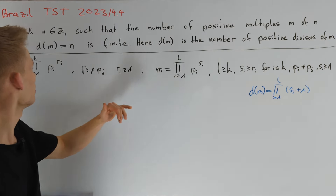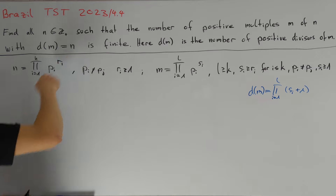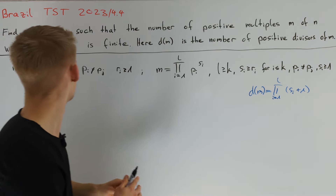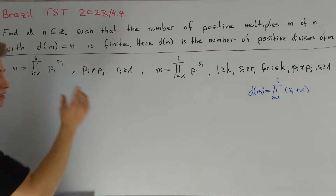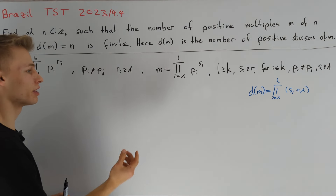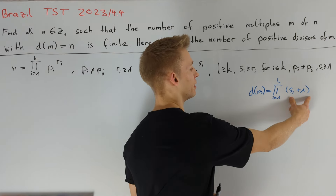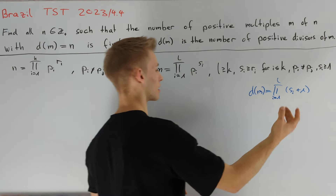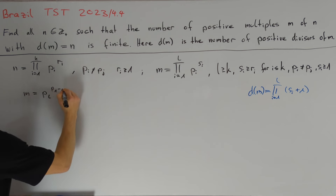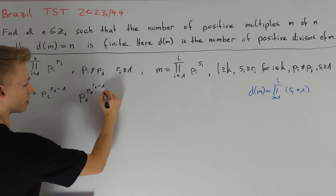Now we are ready to solve the problem. First we want to get an intuition for what is going on, so we try to find some multiples m of n such that d(m) equals n. One idea is to let l equal k and set si equal to pi to the power of ri minus 1. This gives us only one value for m with d(m) equals n, so we try to modify this idea to get more values by setting l equals k plus 1 and splitting one of the factors into two factors.